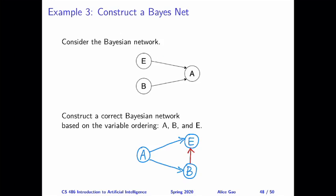This example is on slide 48 in lecture 11. In this example, we have a network with B, E, and A, where B and E jointly cause A to happen.